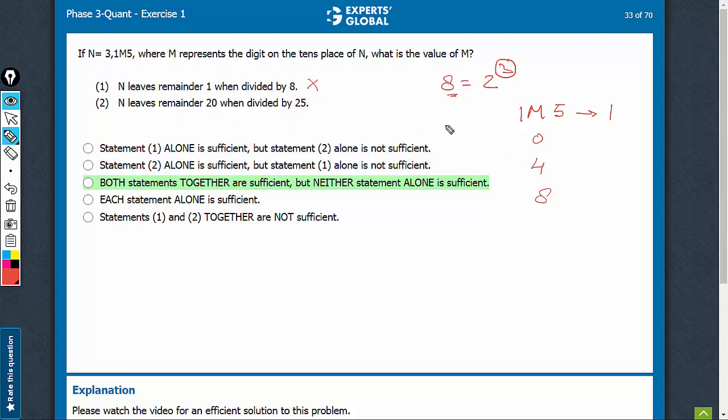Look at statement 2. 25 is 5 raised to power 2, so the last two digits would decide the remainder with 25. The last two digits are M5. Now, M5 is leaving a remainder of 20 with 25.